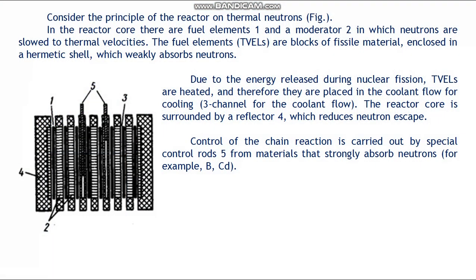Consider the principle of the reactor of thermal neutrons. In the reactor core, there are fuel elements (1) and the moderator (2), in which neutrons are slowed to thermal velocities. The fuel elements are blocks of fission material enclosed in a hermetic shell which weakly absorbs neutrons. Due to the energy released during nuclear fission, the fuel elements are heated and therefore they are placed in the coolant flow for cooling.